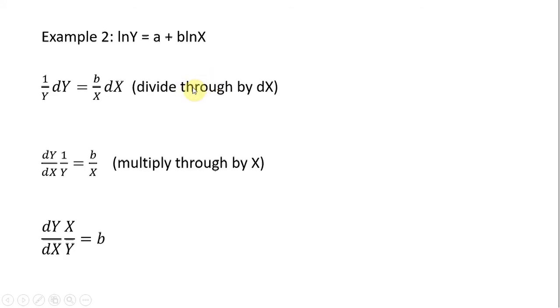Here's a different functional form, a double log form. The dependent variable is in natural logs, the independent variable is also in natural logs. We want to solve for the elasticity. So first thing I'm going to do is take the total differential of this equation. The derivative of the natural log of y is just 1 over y, and we're taking the total differential, so we have dy here.